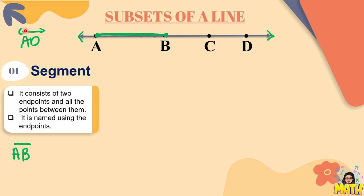So notice the difference between line and segment. Sa line, we have this arrow because line AD extends in both directions. Pero kapag segment, it is just a subset or part of a line in which kung ano yung gamit mong points, dun na nagtatapos yung segment.